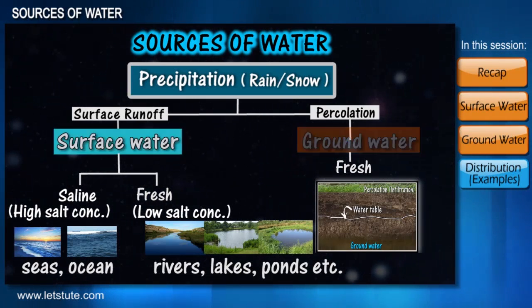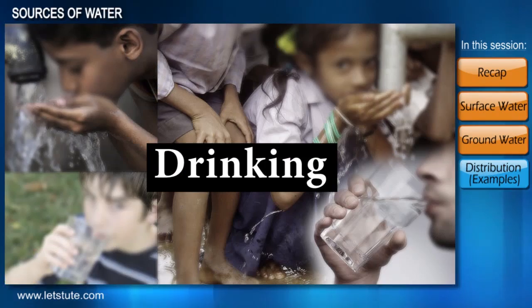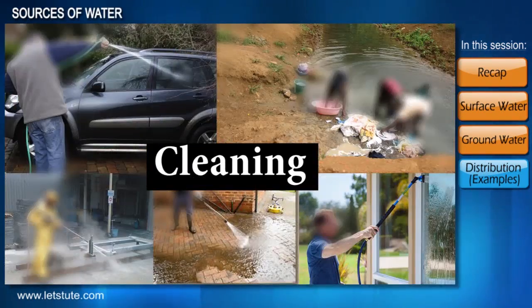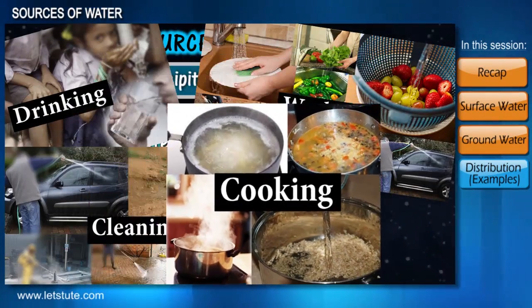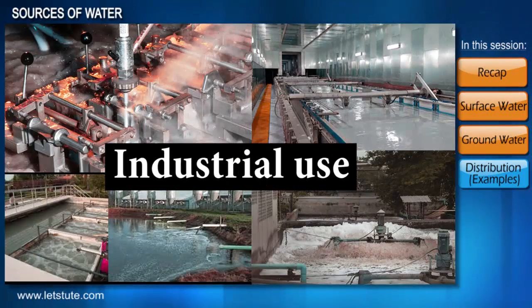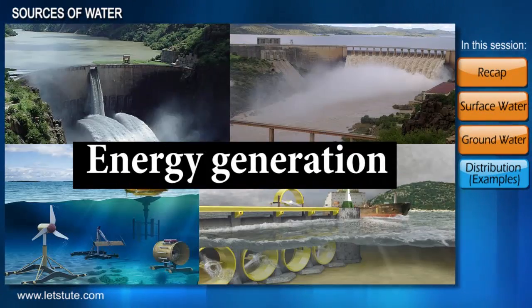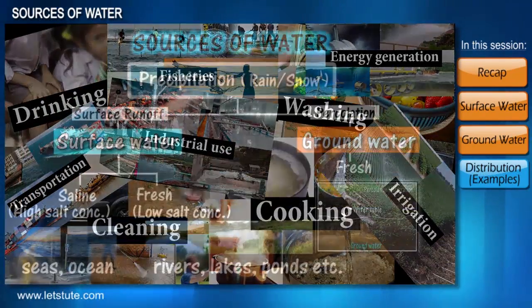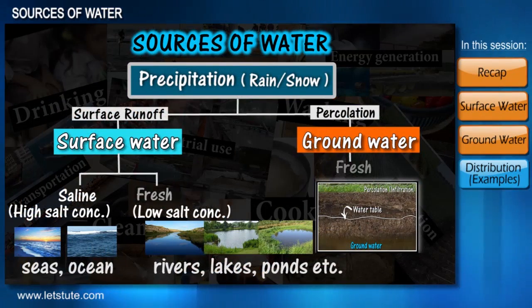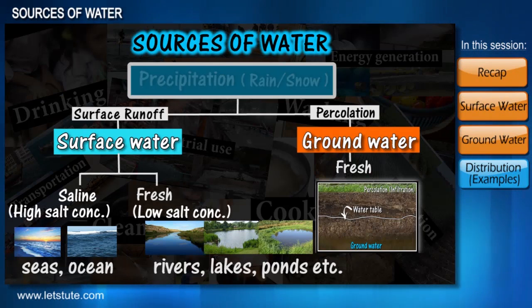So we can say that precipitation is the main source of water, available to us in the forms of surface water and groundwater. We can satisfy our various needs — like drinking, washing, cleaning, cooking, or other uses like irrigation, industrial use, transportation, fisheries, and energy generation — from these freshwater as well as marine water sources.